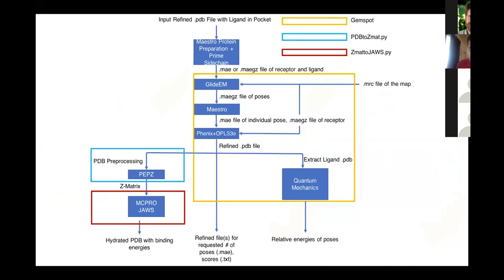In the process of developing this, we made it into a relatively turnkey pipeline. You just prepare your PDB with the ligand roughly in the pocket, prepare the system with Schrödinger's Maestro software, and then the GEMspot script performs the Glide-EM docking, the Phenix OPLS3E refinement, and the quantum mechanics. It also outputs files that can be used with two other scripts to automatically prepare the JAWS calculation. This is a relatively turnkey solution.